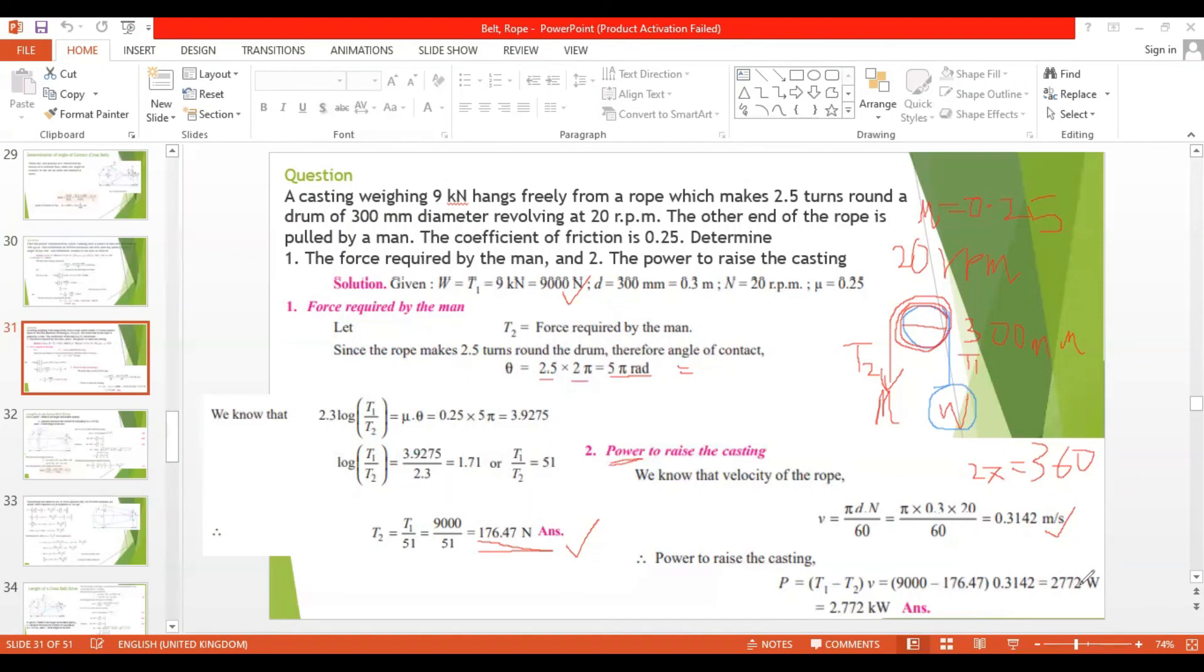That is 9000 minus 176.47 into v, v is 0.3142. That equals 2772 watts, that will be equal to 2.772 kilowatts.